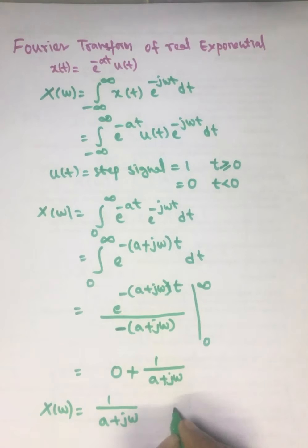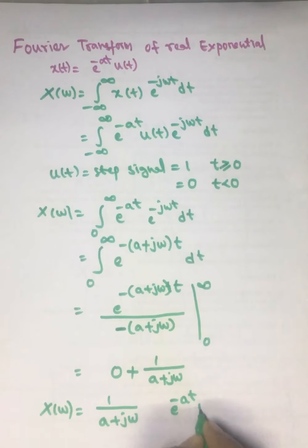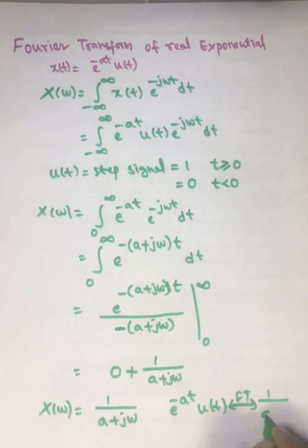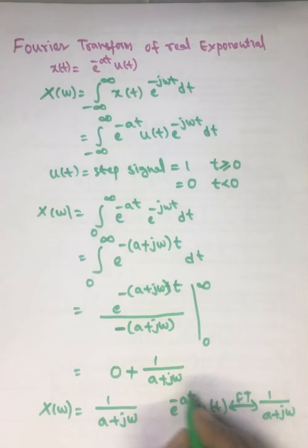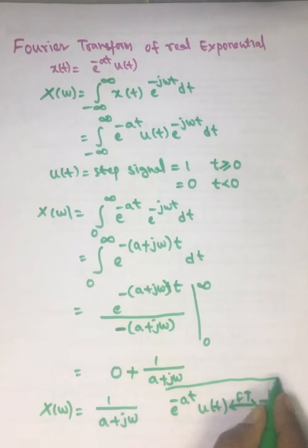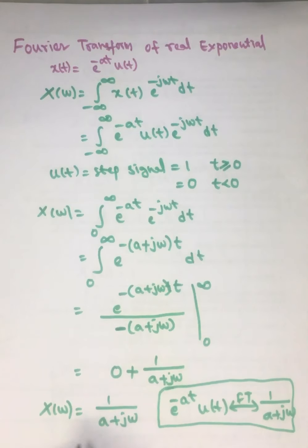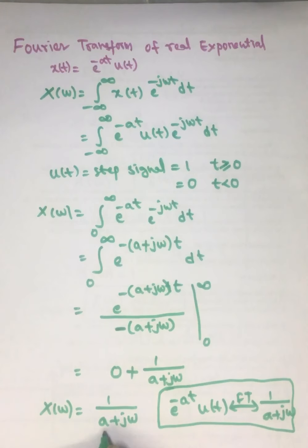So for e^(-at)u(t), the Fourier transform is 1/(a + jω). Now we find out the magnitude and phase response. To find the magnitude response, we multiply and divide by the conjugate of the denominator.